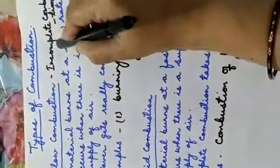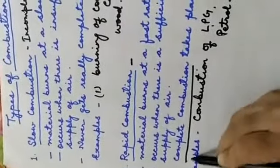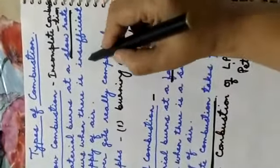Slow combustion is an incomplete combustion, whereas rapid combustion is a complete combustion. Slow combustion takes place at a very slow rate, whereas rapid combustion takes place at a fast rate. In slow combustion there is insufficient supply of air — only a limited amount of air is supplied — whereas in rapid combustion there is a sufficient supply of air.